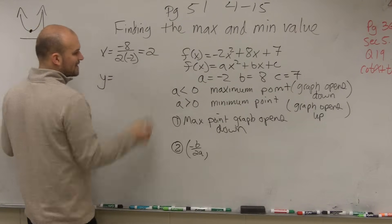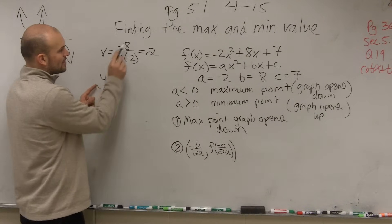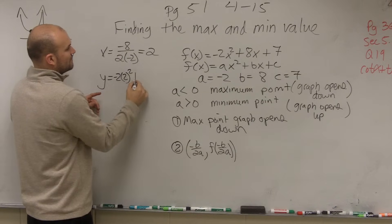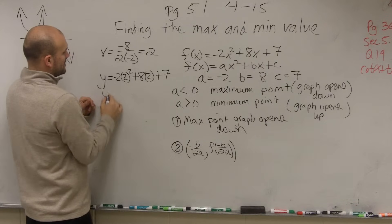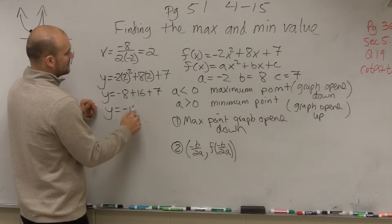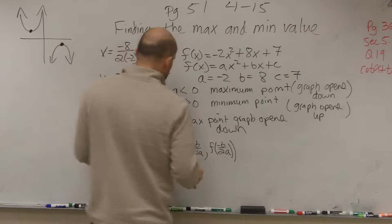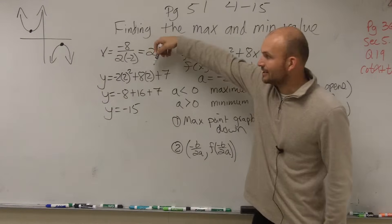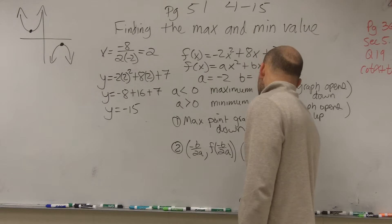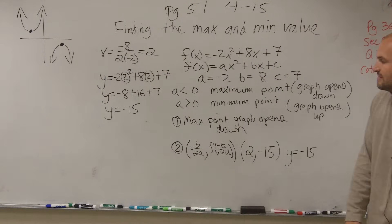Then for y, you plug in this x value. The x-coordinate is opposite of b divided by 2a. To find the y-coordinate, you plug your x value in for x. So y equals 2 squared, which is 4, times negative 2 is negative 8, plus 16, plus 7. y equals negative 15. So my vertex is going to be at x equals 2, and my minimum value will be negative 15, or you could just write y equals negative 15. That's going to be the minimum value of your quadratic.